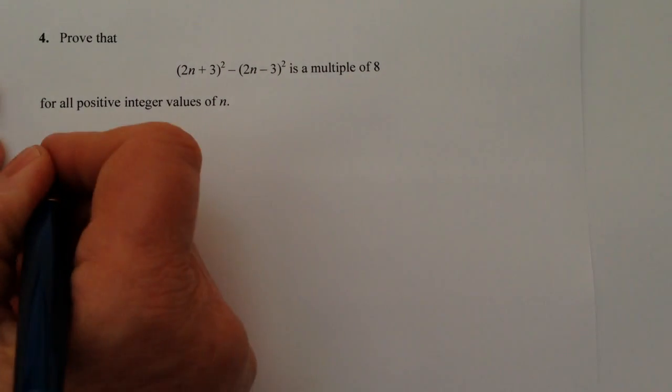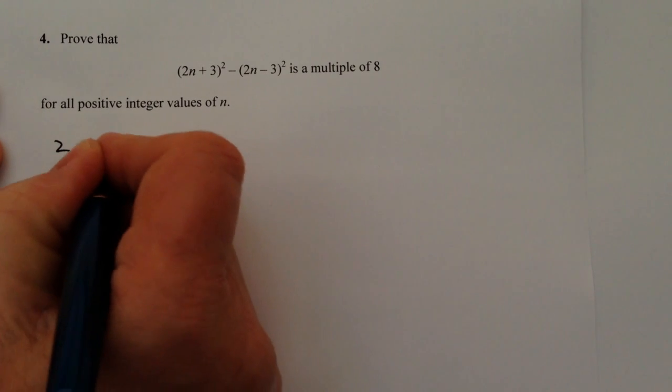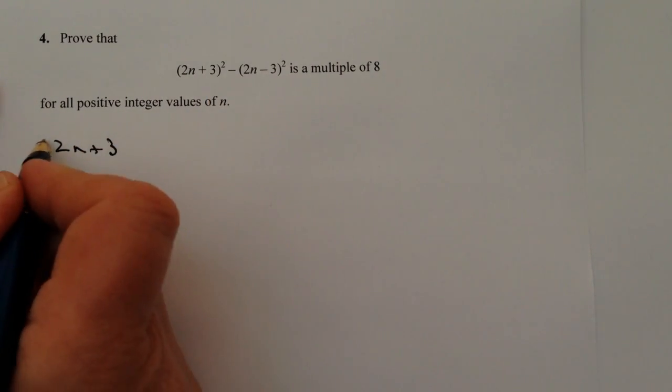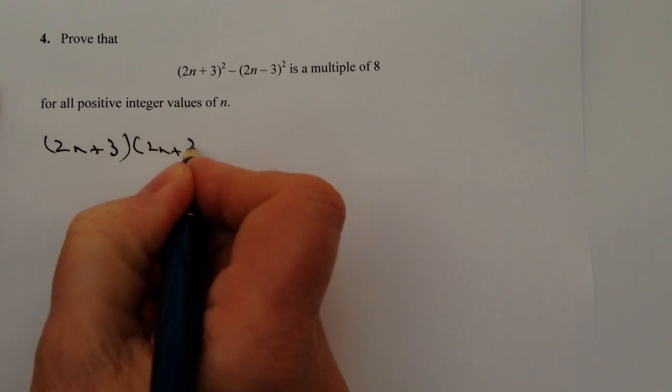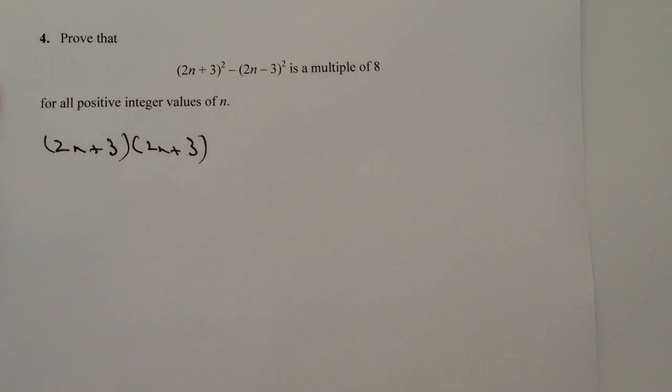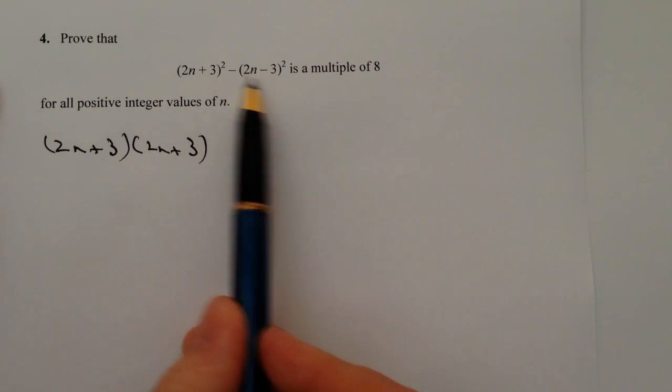So the first thing is that I'm going to work out 2n plus 3 squared, which is this term here. So 2n plus 3 times 2n plus 3. And then the next little bit is this here.